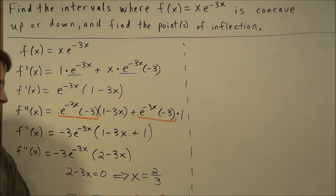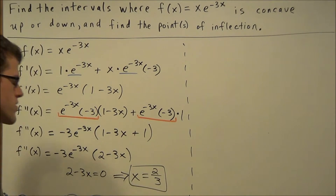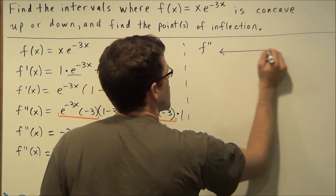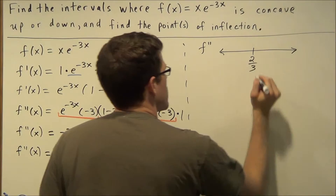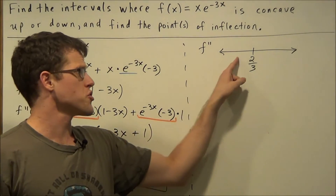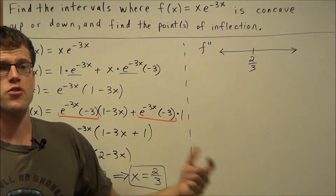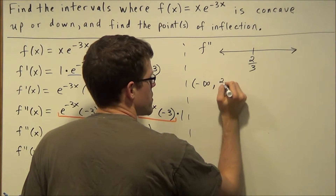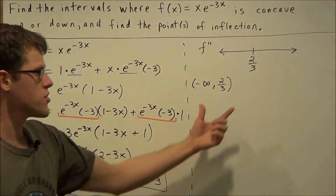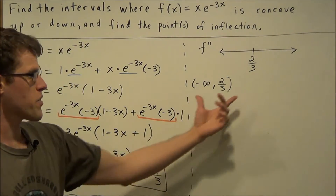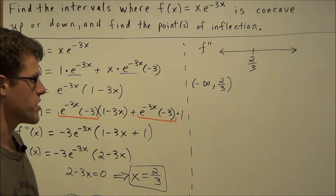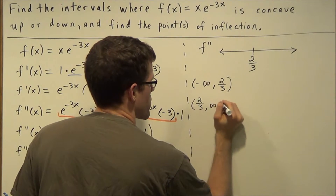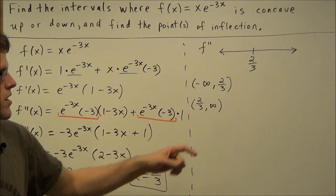For the next stage of this problem we need to make a sign chart for the second derivative, and we're going to cut the number line at 2 thirds. We need to check the two intervals to the left and right of 2 thirds. The first interval is from negative infinity to 2 thirds (open interval), and the second interval is from 2 thirds going to infinity. The numbers that make the most sense to plug in here are 0 and 1.